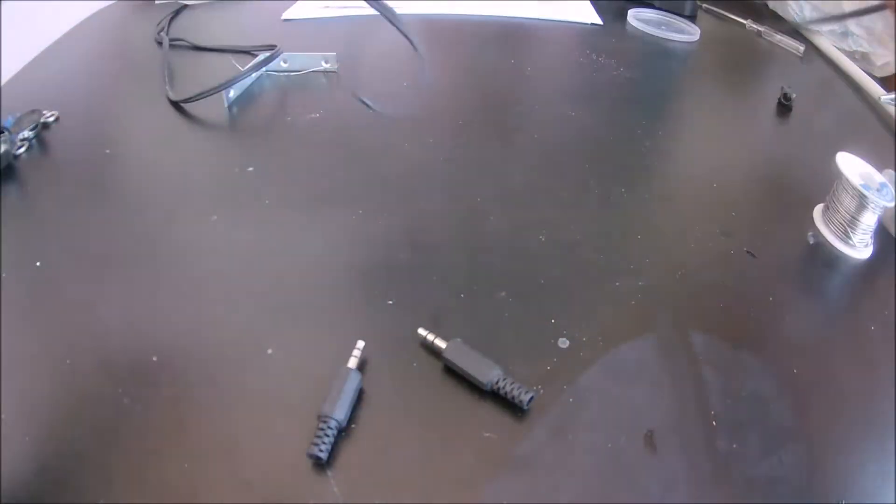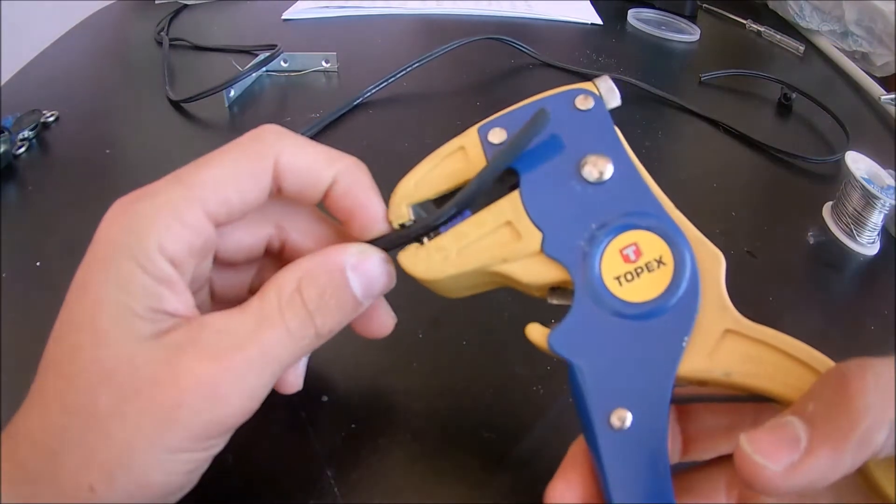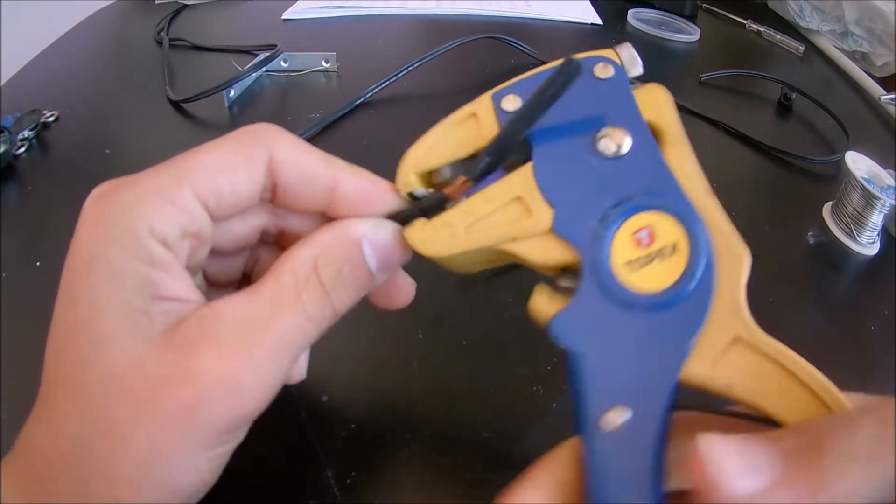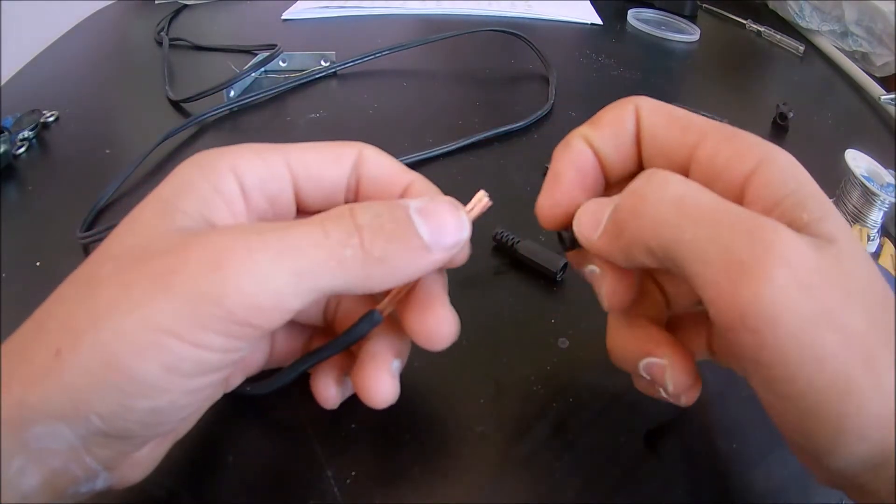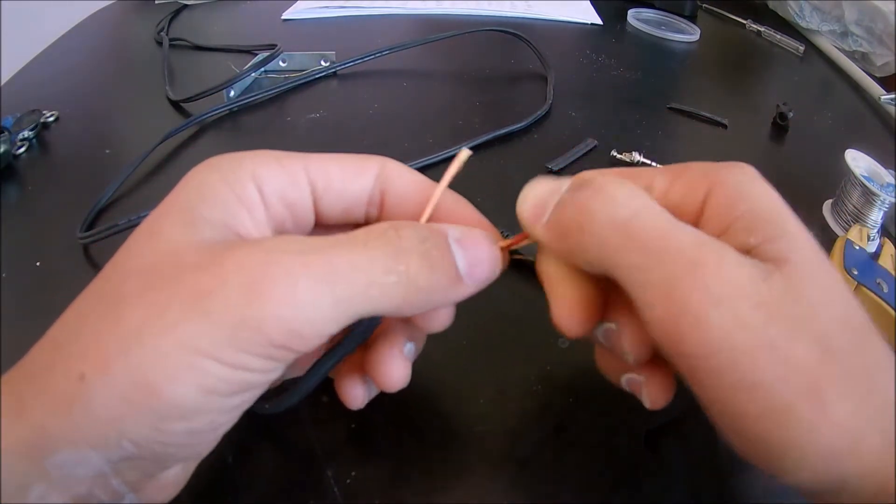So first, grab the speaker wire and strip around 5 centimeters of the outer insulation. Then, remove the audio jack's cover and insert them into the speaker wire like this.